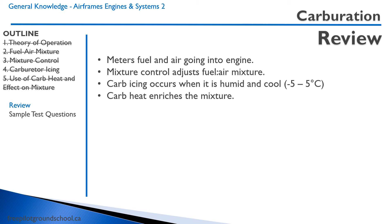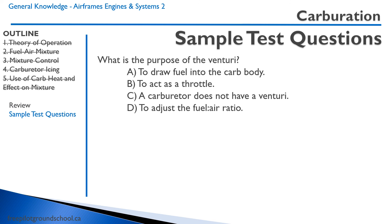The carburetor meters fuel and air going into the engine. The mixture control adjusts the fuel-air mixture. Carburetor icing occurs when it is humid and cool out, and the carburetor heat enriches the mixture. What is the purpose of the venturi in the carburetor? The venturi creates a low pressure which draws fuel into the carburetor body — answer A is correct. Answer B is not correct because the venturi does not act as a throttle; that's what the throttle valve is for. The carburetor does have a venturi, so C is not correct. And D — adjusting the fuel-air ratio — that's what the mixture control does by metering fuel going into the float chamber.